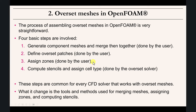Now let's talk about the specifics in OpenFOAM. To generate overset meshes, the basic steps are common to any CFD solver with small differences. You need to: generate the component meshes and merge them together — you can use any method, structured or unstructured. Then define the overset patches or boundary conditions. Then assign zones — priorities — which doesn't work very well in OpenFOAM yet, but they're getting there. These first steps are done by the user.